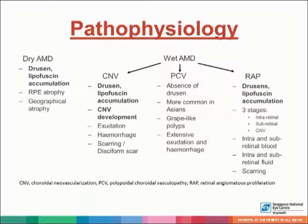CNV includes features such as drusen, lipofuscin accumulation, CNV development, exudation, hemorrhage, as well as scarring or even a disciform scar. PCV has classically absence of drusen; it's more common in Asians with features of a grape-like polyp as well as extensive exudation and hemorrhage. RAP is more similar to CNV with presence of drusen and lipofuscin accumulation. It has three stages, starting as an intraretinal pathology, followed by a subretinal, and finally developing into a CNV, usually with intraretinal and subretinal blood and fluid, and finally turning into scarring.